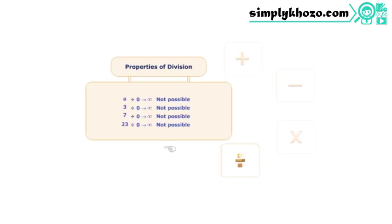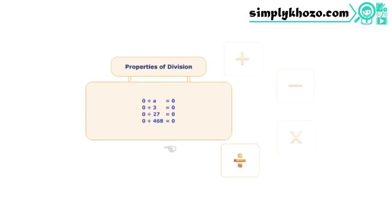However, when a whole number divides zero, the result is always zero.